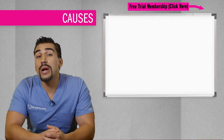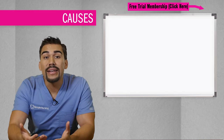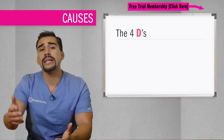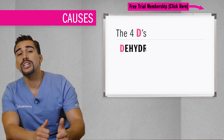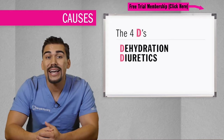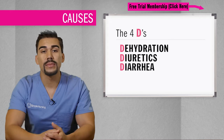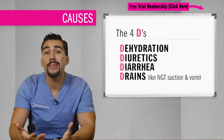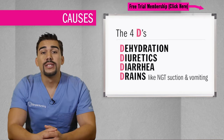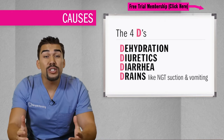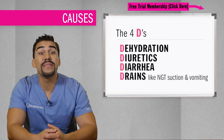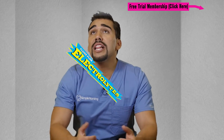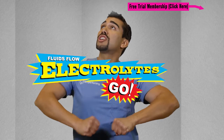The main causes that drain potassium from the body and dump them into the potty — we use the four D's: dehydration, diuretics, diarrhea, and drains like NG tube suctioning and vomiting, which basically does the same thing. Simply, all major fluids that leave your body have electrolytes, because where fluids flow, electrolytes go!